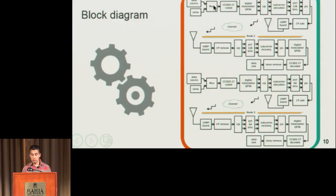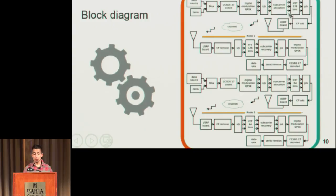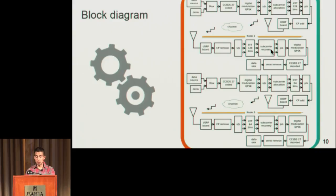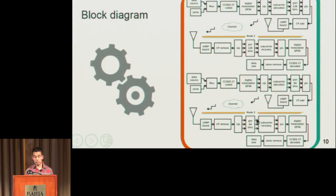Node 1 is transmitting information. We are applying a Fourier transform with 128 bins and sending the information to the full duplex node. Node 1 is working as half-duplex, sending information to Node 2, which is working as full duplex. Node 2 receives this information, applies the fast Fourier transform with 128 bins, and simultaneously sends other information to Node 3 using 64 bins. Node 3 receives the information and applies the Fourier transform with 64 bins, recovering the data.